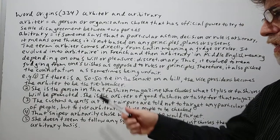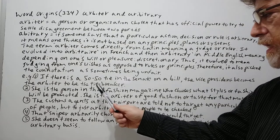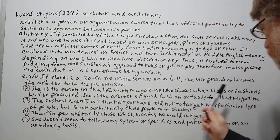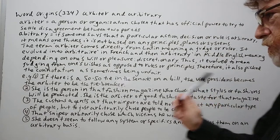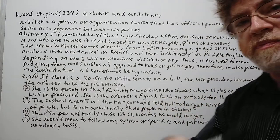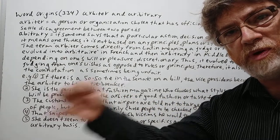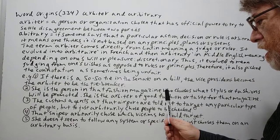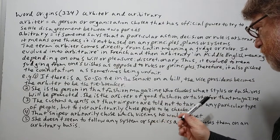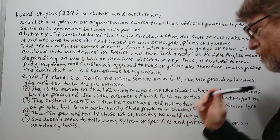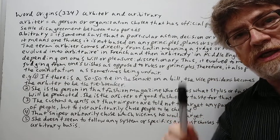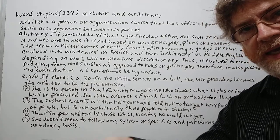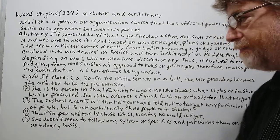Number two: She is the person in that fashion magazine who chooses what styles or fashions will be promoted, pushed, and advertised. She is the arbiter of good fashion or taste for that magazine. Sometimes we say somebody is the arbiter of something in this way.